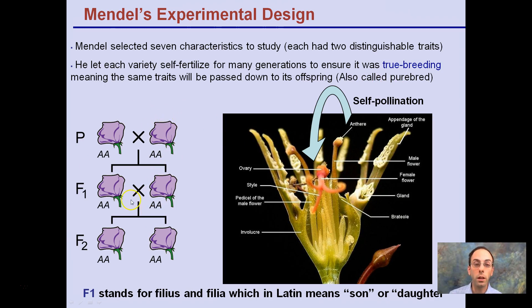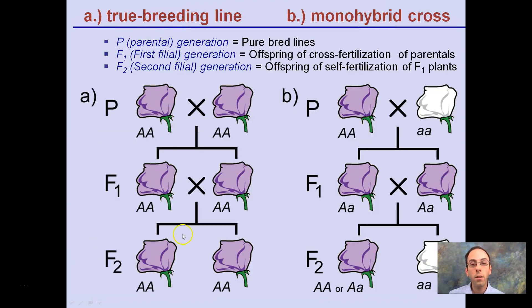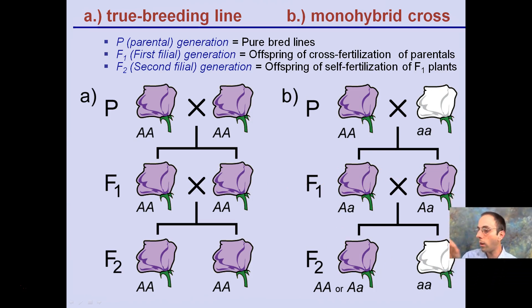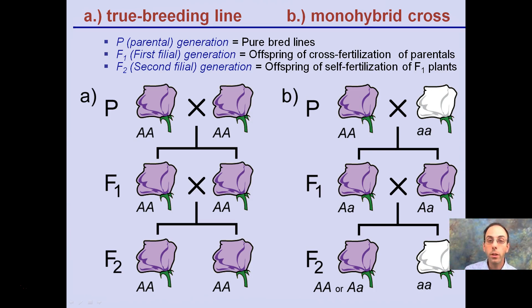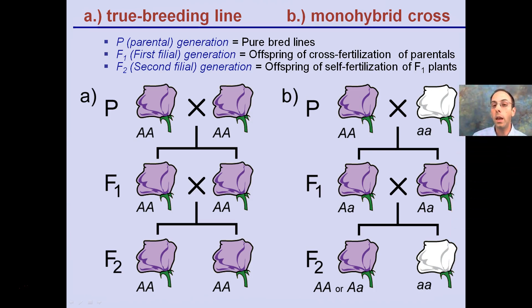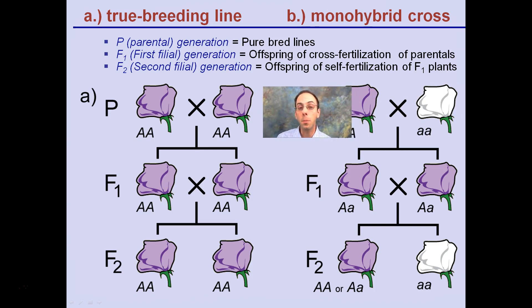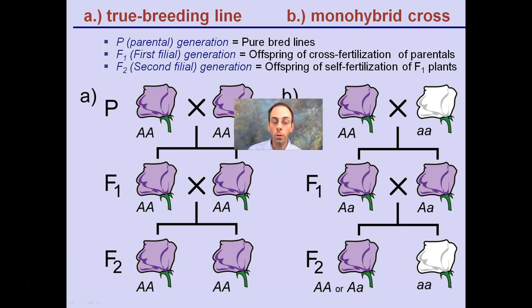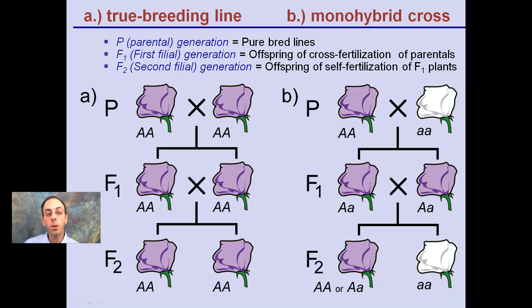In this case, two purple flowers always produce purple flowers — that's called a true breeding variety, or purebred. The true breeding line is indicated here. Over here we have two purple flowers that are both homozygous dominant, meaning they are going to be true breeding, and we can see throughout the whole life cycle that they're all purple. However, looking at part B, the F1 generation looks phenotypically the same but genotypically different.